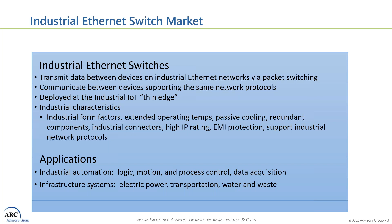Industrial Ethernet Switches are distinguished from their commercial counterparts by characteristics such as industrial form factors, operating temperatures, passive cooling, and similar features. These devices are typically used in either Industrial Automation or Infrastructure Applications. In infrastructure, we find them in electric power T&D, transportation like rail, water and waste, and other types of applications.